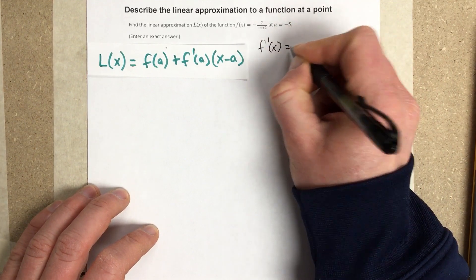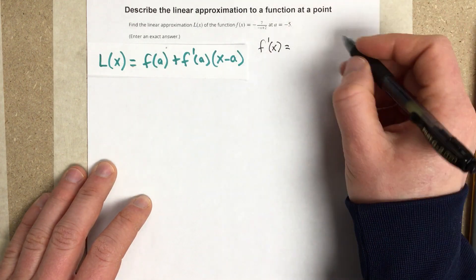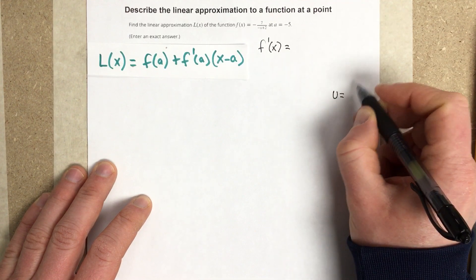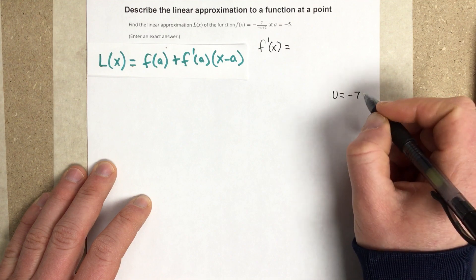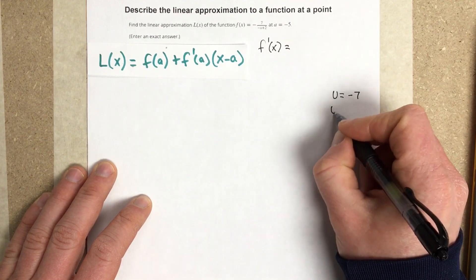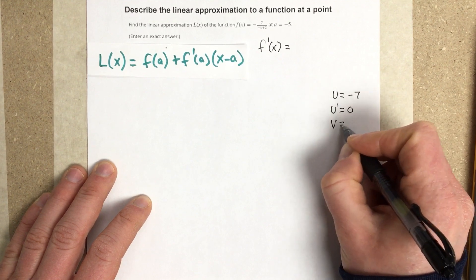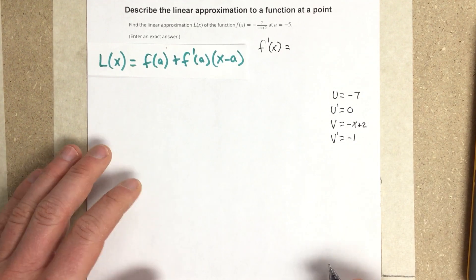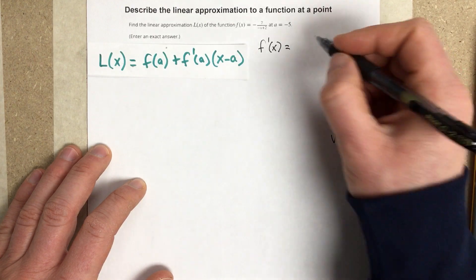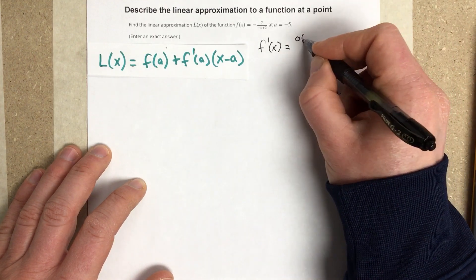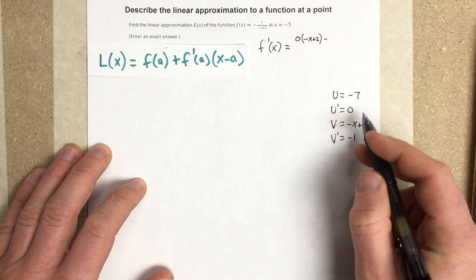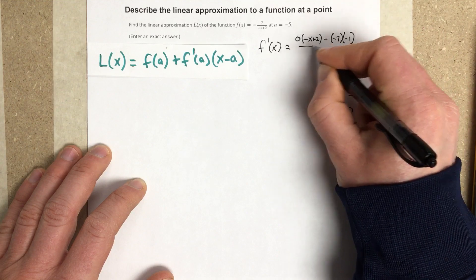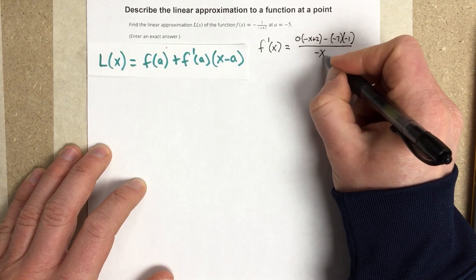So we're going to say U is equal to negative 7. We're going to do a quotient rule. U prime is 0. V is negative X plus 2 and V prime is negative 1. So then we're going to use the quotient rule U prime times V. I end up with 0 times negative X plus 2 minus negative 7 times negative 1, so negative 7 times negative 1 all over negative X plus 2 squared.